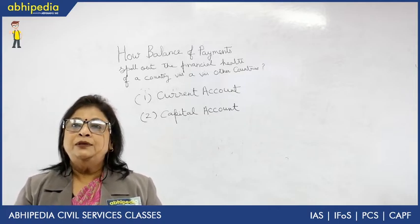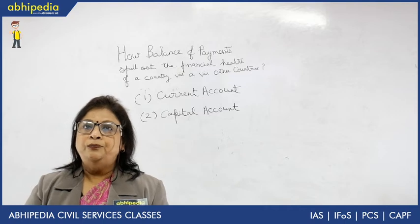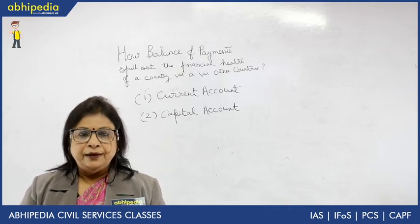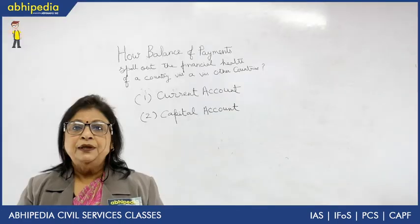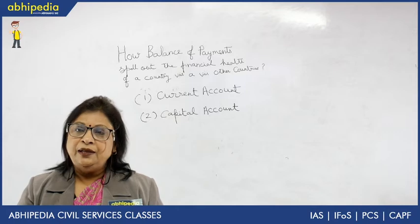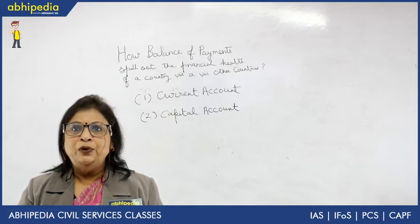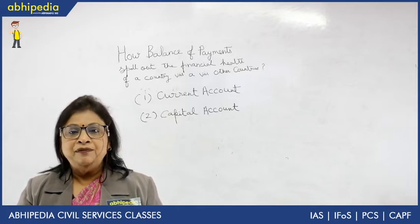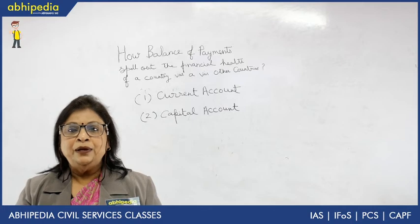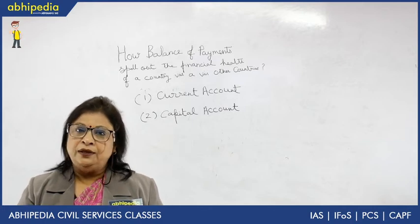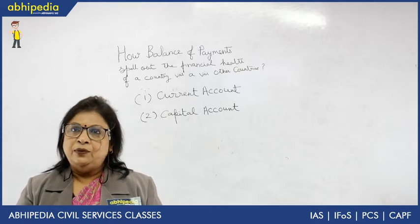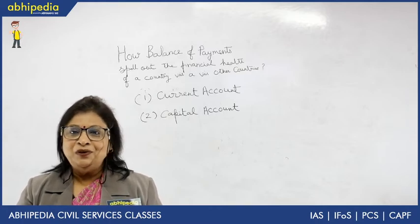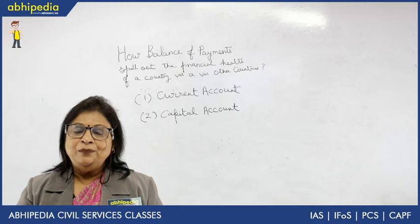So this is the structure of balance of payment: the current account, which includes visible items, invisible items, and unilateral transfer; and the capital account, which speaks about capital inflows into our country and capital outflows from our country to other countries. I hope the structure is clear, because it is a very important concept.